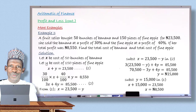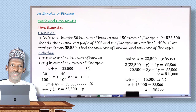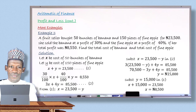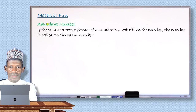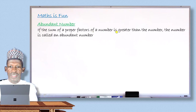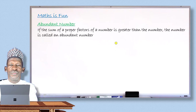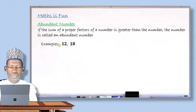With this, my dear student, I have come to the end of this lesson. I hope you enjoyed it. Now let me move to the last segment, Math is Fun, and explain what abundant numbers are. A number is abundant if the sum of its proper factors is greater than the number itself.